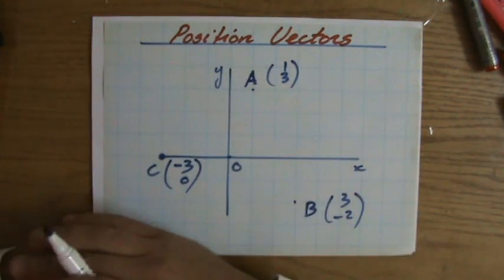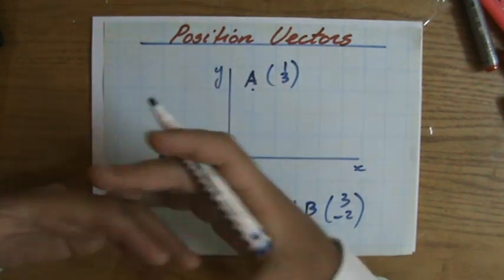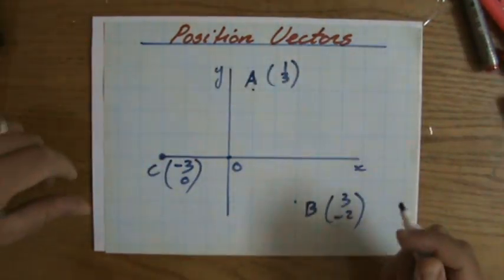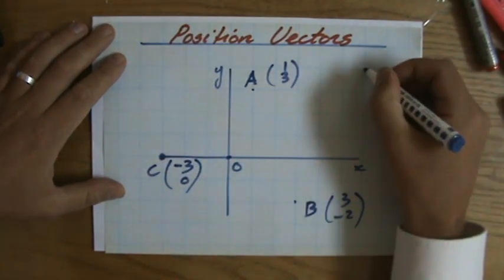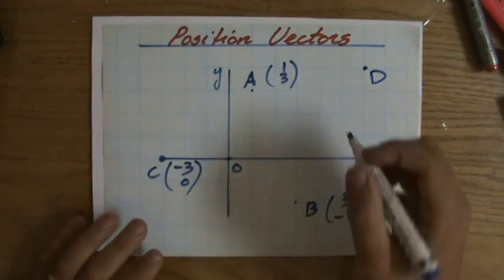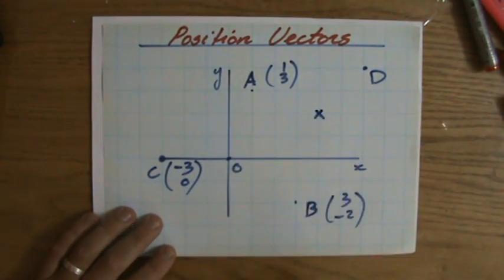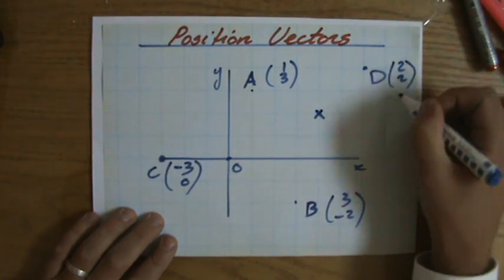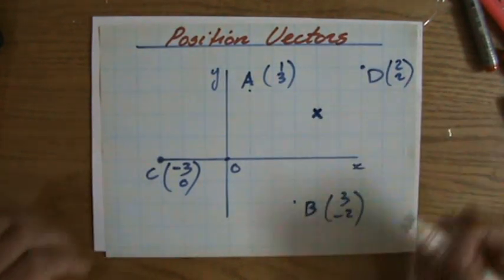Position vectors, relative to a fixed point, usually the origin. It could be any point. Let me do one last one. Let's say point D. What is the position vector of point D relative to the X? Well, that's going to be two, two relative to the X.